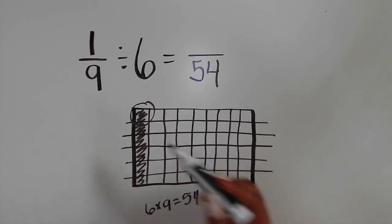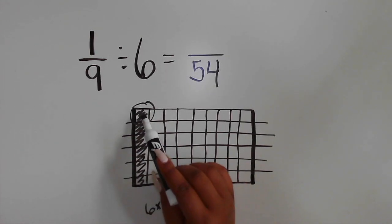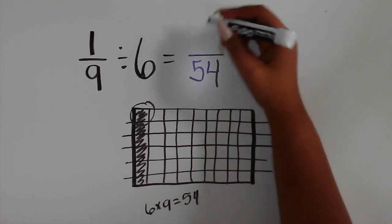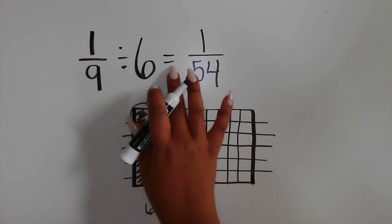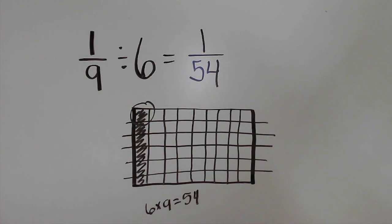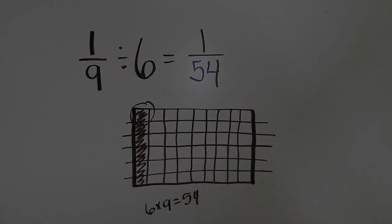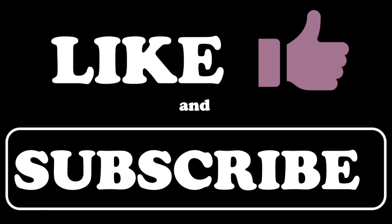Remember, the goal is to determine the size of each, or 1, part out of the whole, so 1 is the numerator. 1 ninth divided by 6 equals 1 fifty-fourth.